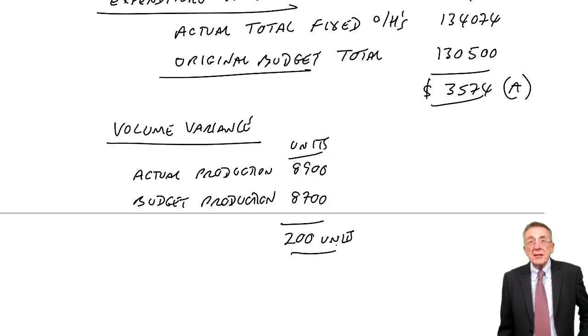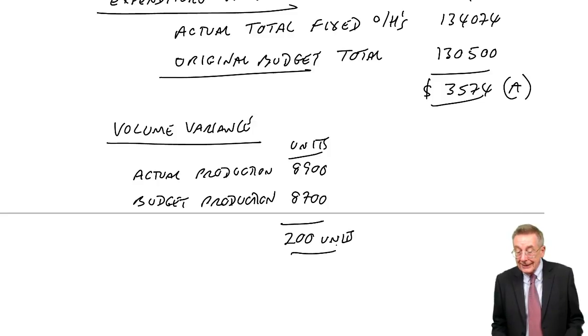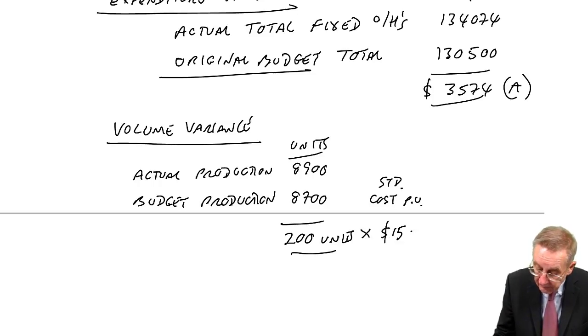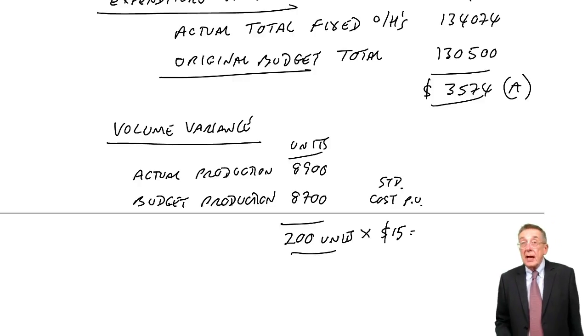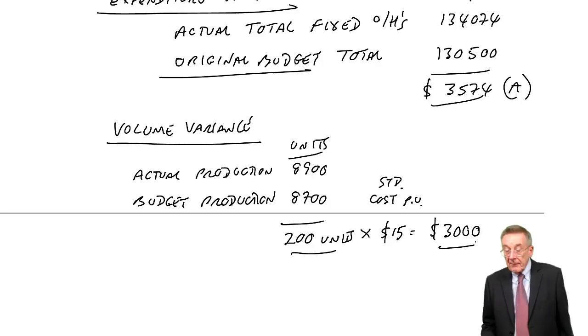We'd produced 200 units more than we expected. And therefore, because it was absorption costing, we charged 200 units more fixed overheads than we should have done. And what's the effect of charging 200 more fixed overheads than we should have done? Well, at standard cost per unit, for fixed overheads, which was 15, it meant in arriving at our flexed profit, we charged 3,000 more than we should have done.